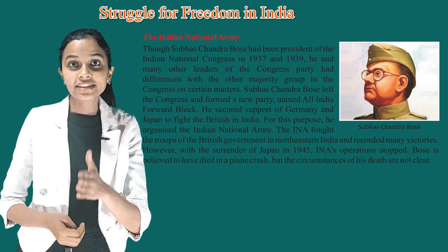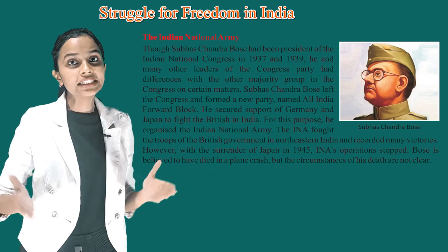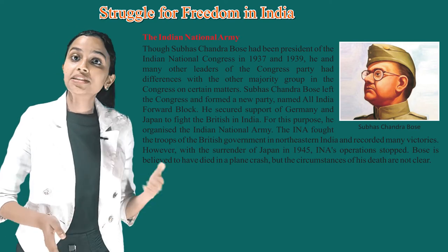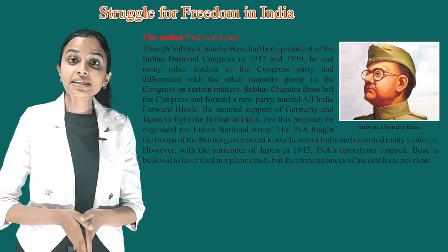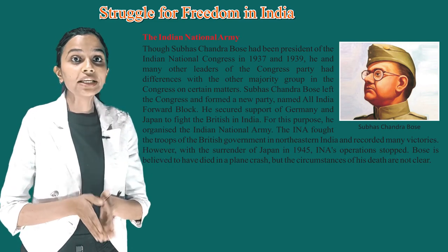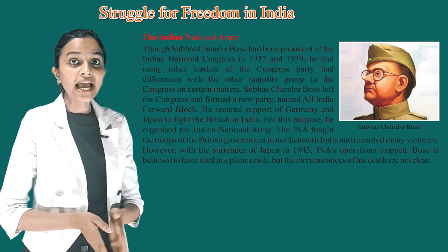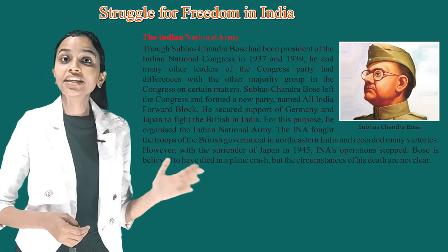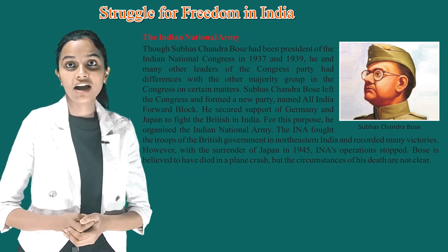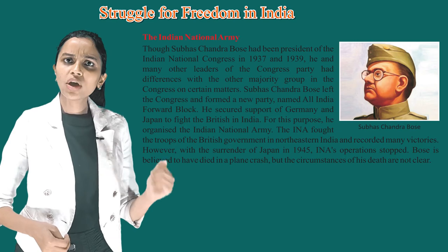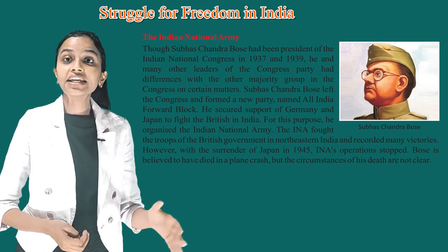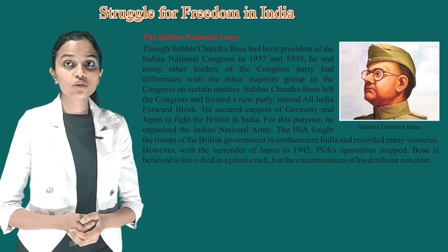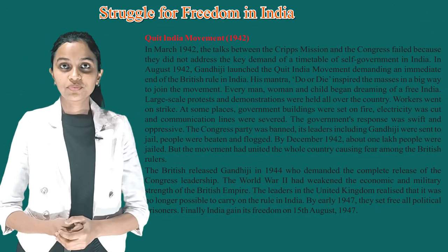The Indian National Army: though Subhash Chandra Bose had been president of the Indian National Congress in 1937 and 1939, he and many other leaders had differences with the majority group in the Congress. Subhash Chandra Bose left the Congress and formed a new party named the All India Forward Bloc. He secured support of Germany and Japan to fight the British in India, and for this purpose organized the Indian National Army (INA). The INA troops fought the British government in Northeastern India and recorded many victories. However, with the surrender of Japan in 1945, INA operations stopped. Bose is believed to have died in a plane crash, but the circumstances of his death are not clear.